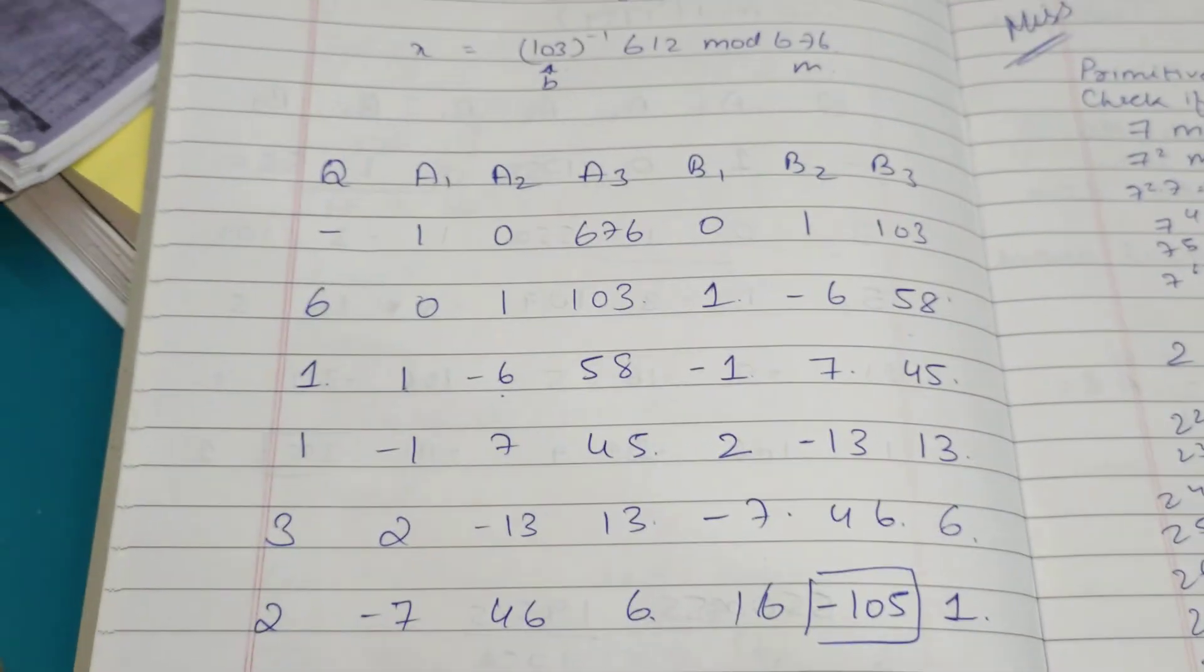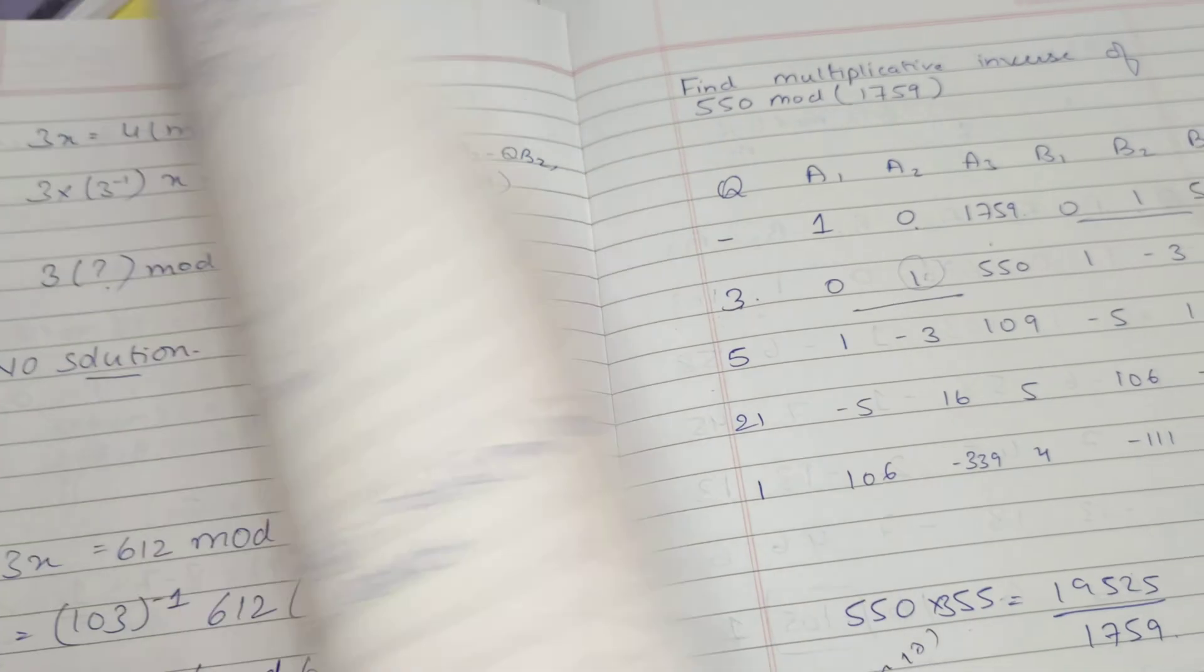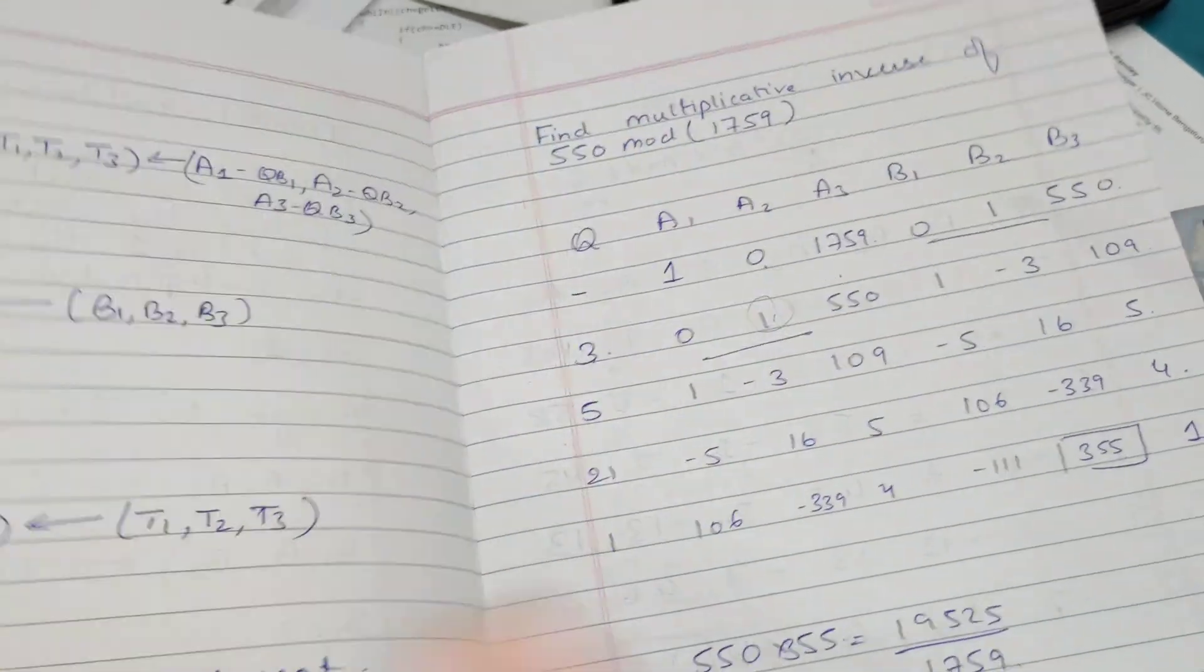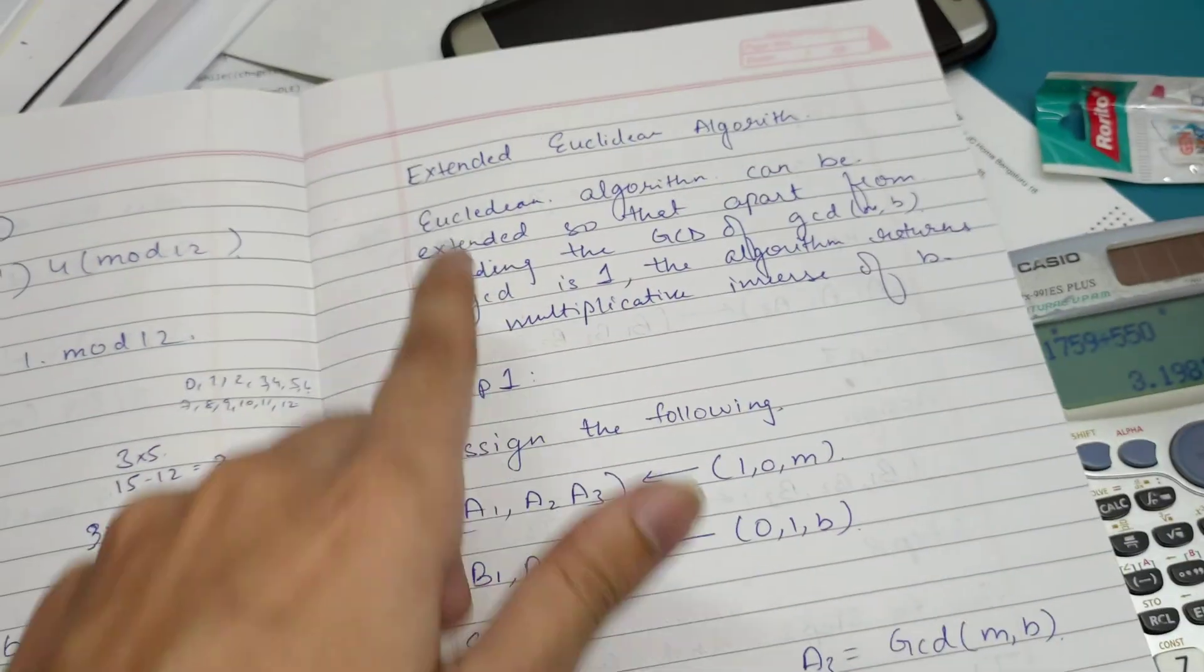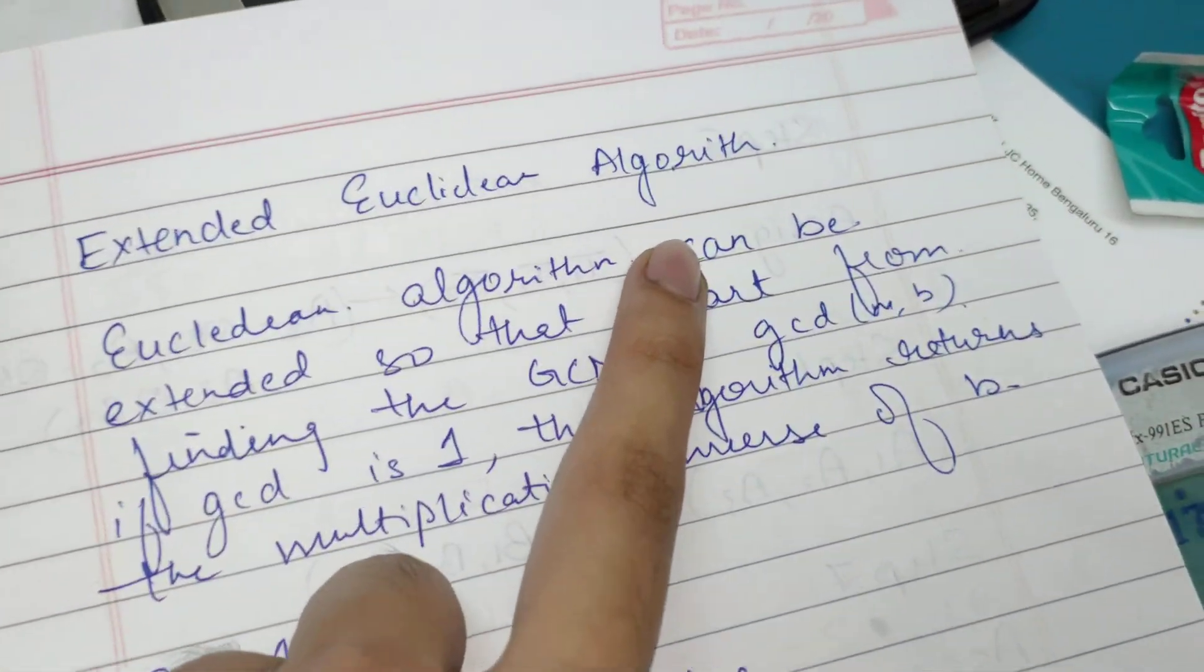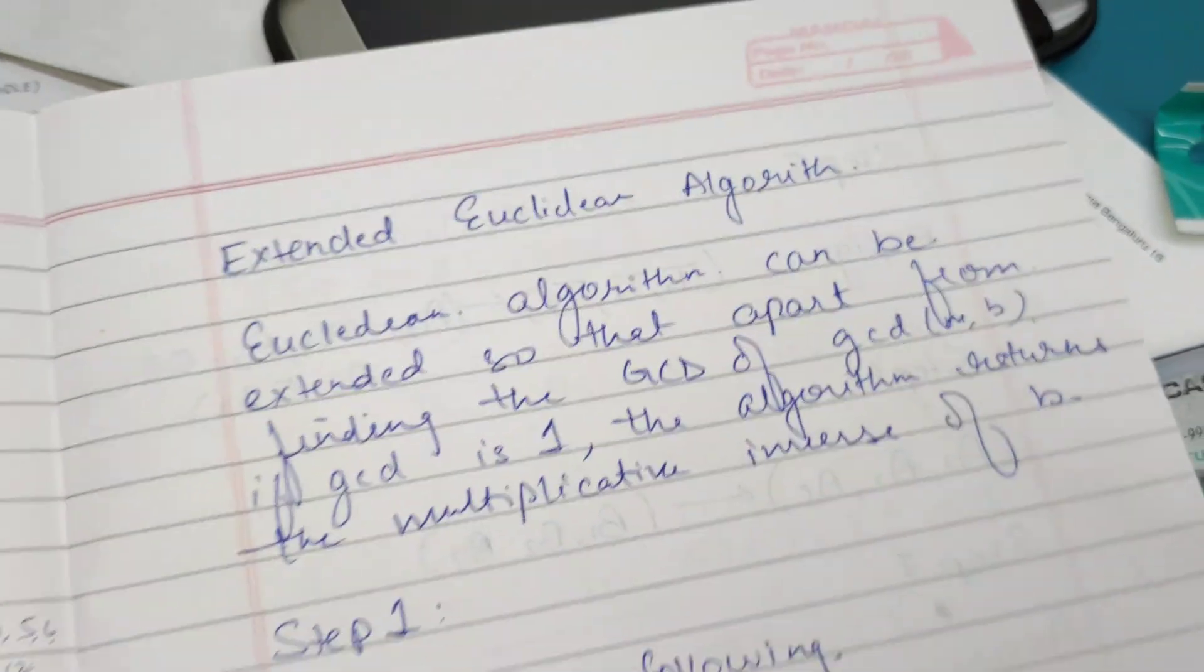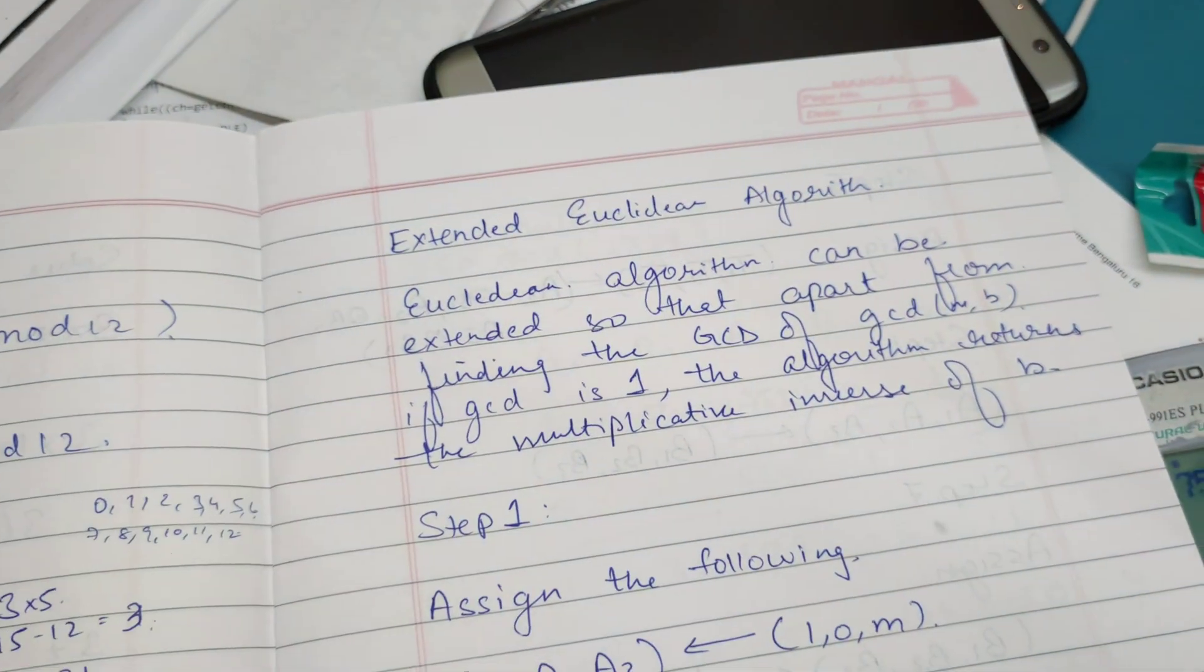This is the method to find multiplicative inverse. Because it's a big number, you have to use Extended Euclidean Algorithm. Like the video, bye.